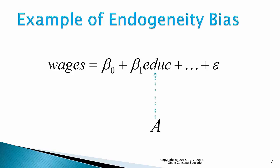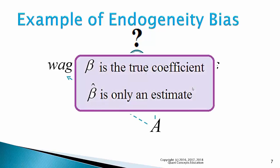Now, if A is correlated to education and also correlated to wages, then this means education is correlated with the error term and we now have a problem. Basically, the estimate of the coefficient for education cannot be trusted. It's now a biased estimate, and its value is not reflective of its true population value. Note that the regression coefficient with the hat is a sample estimate, and the coefficient without the hat is a true population coefficient.